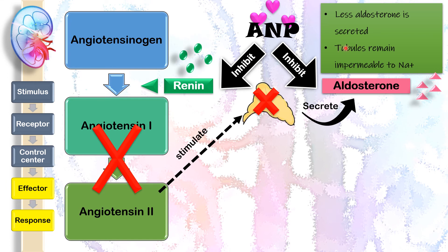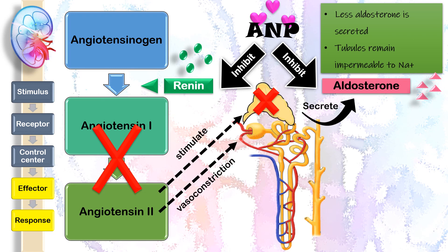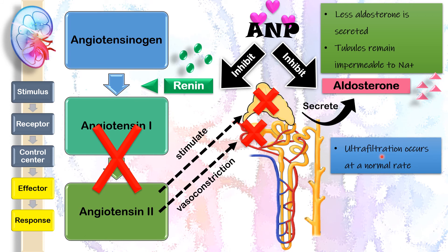Because of that, the distal convoluted tubule and collecting duct of the nephron will remain impermeable to sodium ions. In this way, the excess sodium ions can be excreted through urine. The second role of angiotensin 2 was to promote vasoconstriction at the glomerulus to maintain sodium ions within the blood vessels. But now, without angiotensin 2, vasoconstriction will not happen. The afferent arteriole will have a larger diameter than the efferent arteriole, so ultrafiltration will occur at a normal rate, and the excess sodium ions can be forced out into the nephron and excreted with urine.